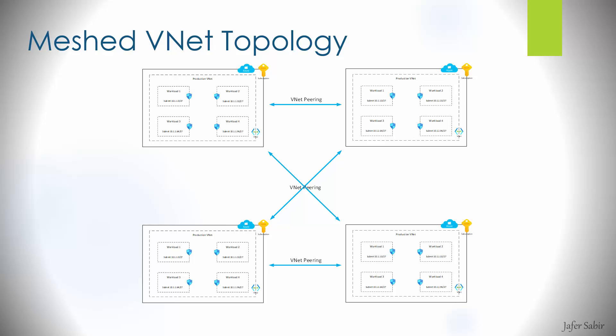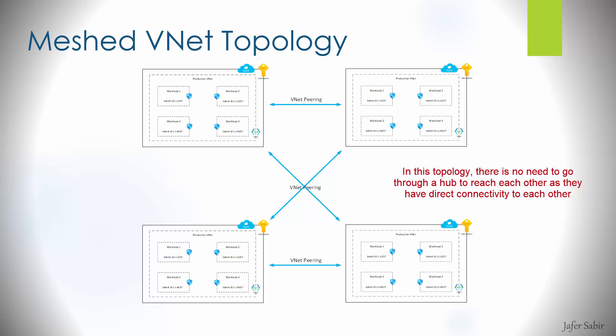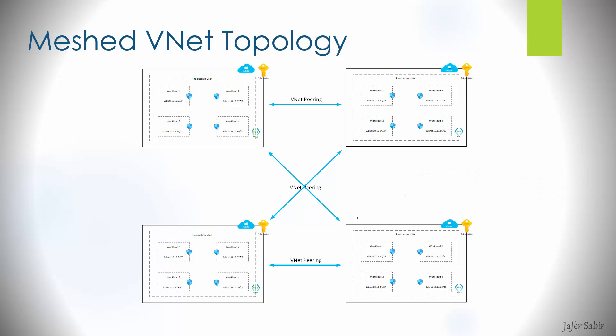The last example is a meshed VNet topology, where all VNets are directly connected to each other. The virtual networks are connected using peering connections, and once peered they can send traffic to each other over the Azure backbone network. Beyond topology, there are also other things to consider such as disaster recovery, business continuity, backups, and replication of services within the VNets.